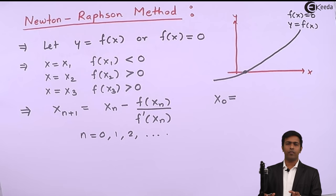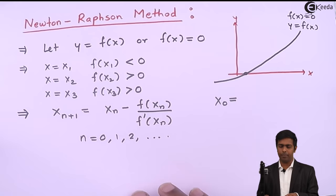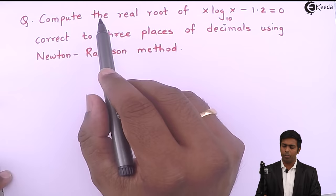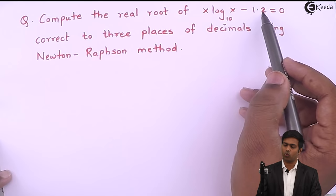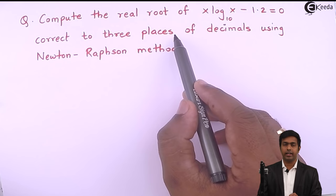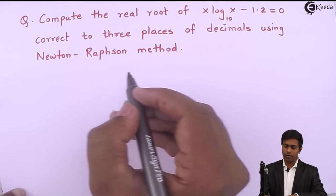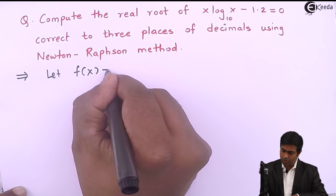To understand this method, let us take one example. We have to compute the real root of the equation x·log₁₀(x) − 1.2 = 0, correct to 3 decimal places, using the Newton-Raphson method. So here we let f(x) = x·log₁₀(x) − 1.2.